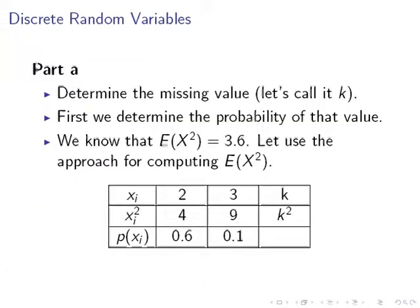First, we have to find this other value. Determine the missing value, let's call it k, and we're going to determine the probability of that value. We know that the expected value of X squared is 3.6, so we're going to use the approach for computing E(X²) to find out what k is, the missing value.